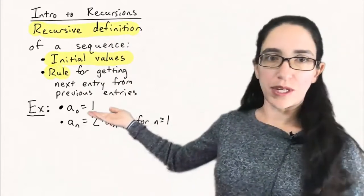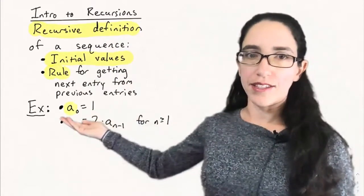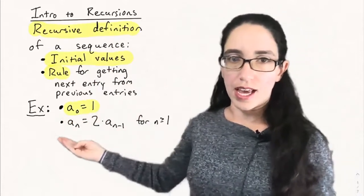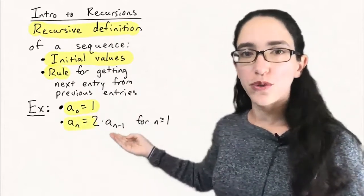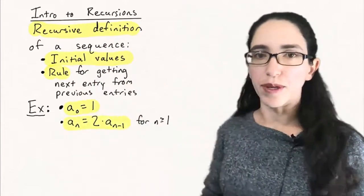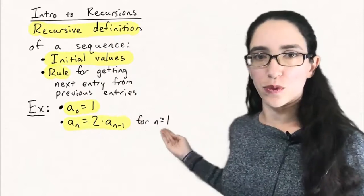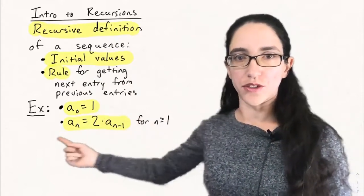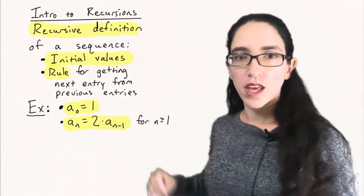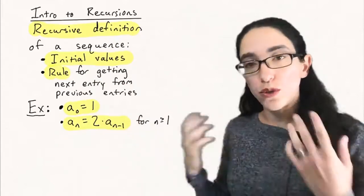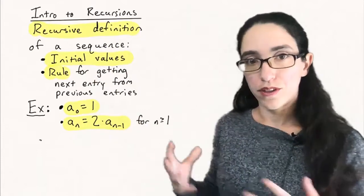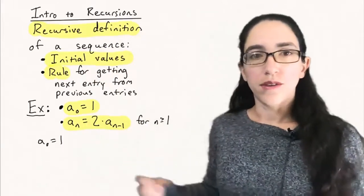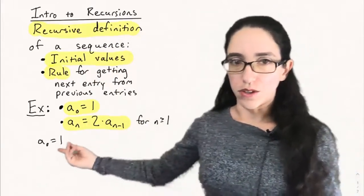Here's an example. Say we set a₀ equal to 1, and aₙ to be 2 times aₙ₋₁ for n greater than or equal to 1. So this is the initial value, and this is the recursion. Using these two statements, we can build up what the entire sequence is, starting at a₀.